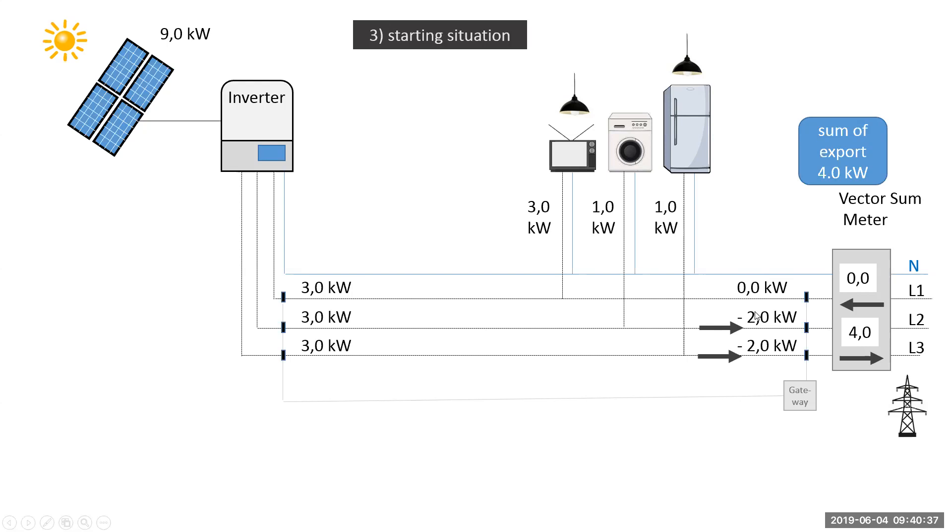Two would be going out on L2 and two would be going out on L3, and L1 would be equal because the three for that circuit and three that the battery is giving is zero. So the net export would be four.